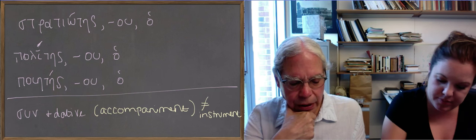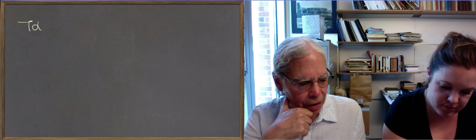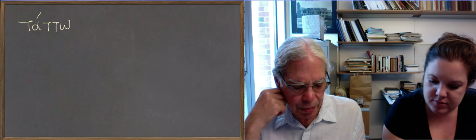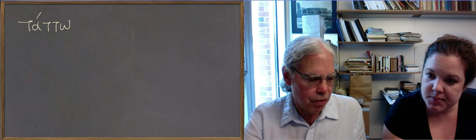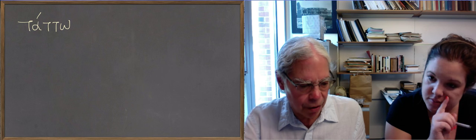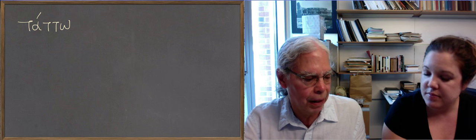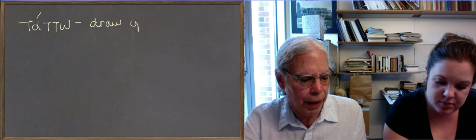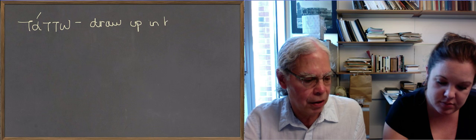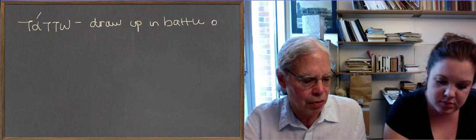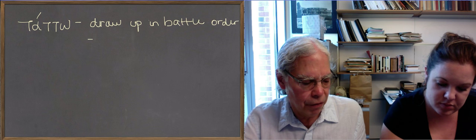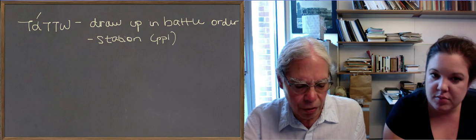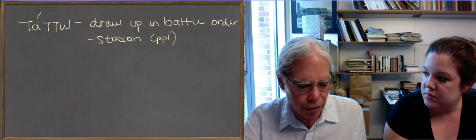The next word is the verb tatto, with two t's. Principal parts are tatto, taxo, etaxa. Tetakha is the perfect, tetagmai, etakhthe. Which means to draw something, draw people as the object up in battle order. To organize people for fighting, to station them for battle. So the English word tactics comes from this same root. And the semantics of this word are pretty much confined to battle, to fighting. So you station somebody in battle, you draw a group of people up in battle order, and stuff like that.